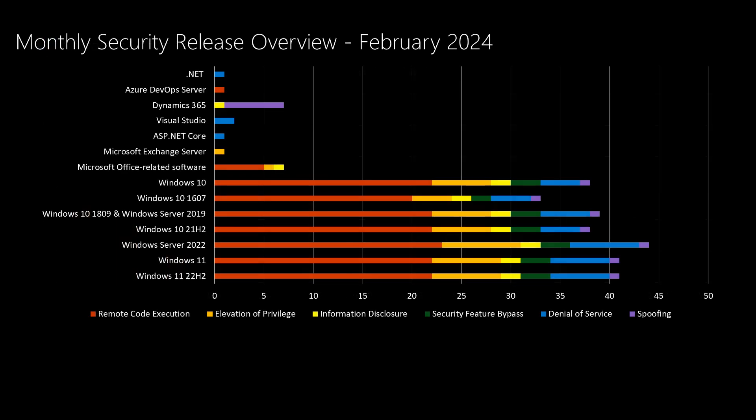Looking at the Windows products in this release, we've been averaging in the mid-40s for most Windows products. It varies by specific product — we're down into the low 30s for Windows 10 1607, but up at 44 for Windows Server 2022. Overall we're right about in line, maybe a little bit lower on average across all the Windows products.